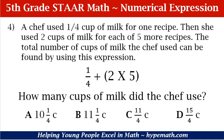Problem number four. A chef used 1/4 cup of milk for one recipe. Then she used two cups of milk for each of five more recipes. The total number of cups of milk the chef used can be found by using this expression: 1/4 plus, in parentheses, 2 times 5. How many cups of milk did the chef use? A: 10 and 1/4 cup. B: 11 and 1/4 cup. C: 11/4 cups. D: 15/4 cups.